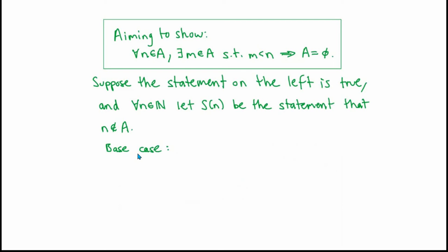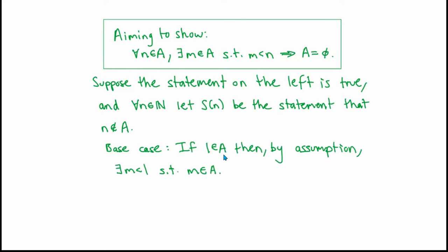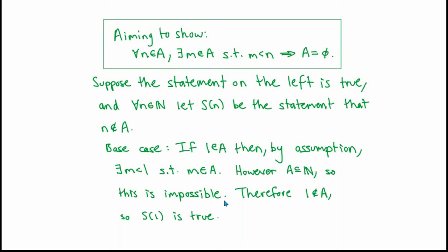So we're trying to prove the contrapositive of our original conditional statement. That means we can suppose the universal statement on the left is true, and we want to prove using mathematical induction that for every n in ℕ, the statement s(n) — that n is not an element of A — is a true statement. Let's start by proving the base case. We want to show that s(1) is true, which is the same as saying that 1 is not an element of the set A. Let's argue by contradiction: if 1 were an element of the set A, then by our assumption that the universal statement on the left is true, it would mean that there's an integer m in A which is strictly less than 1. But A is a subset of the natural numbers, and there are no natural numbers less than 1. So this is impossible. Therefore, 1 is not an element of A, which means that s(1) is a true statement. That establishes the base case.